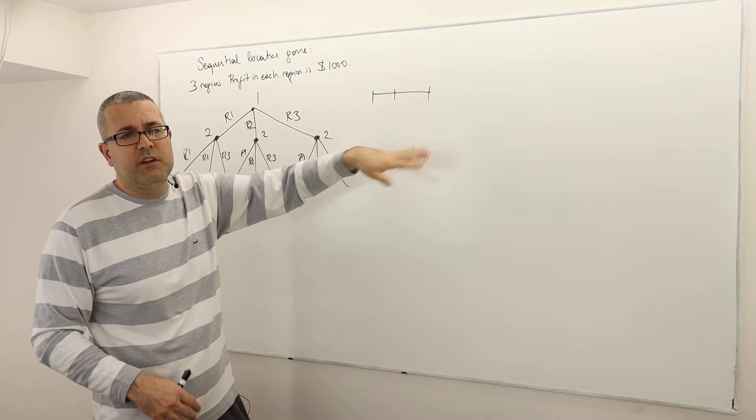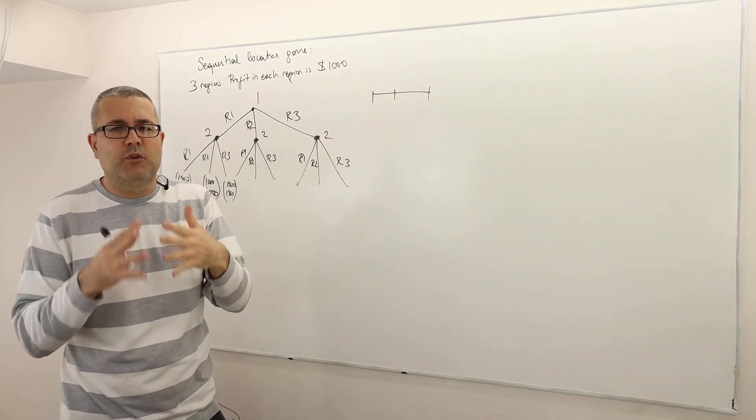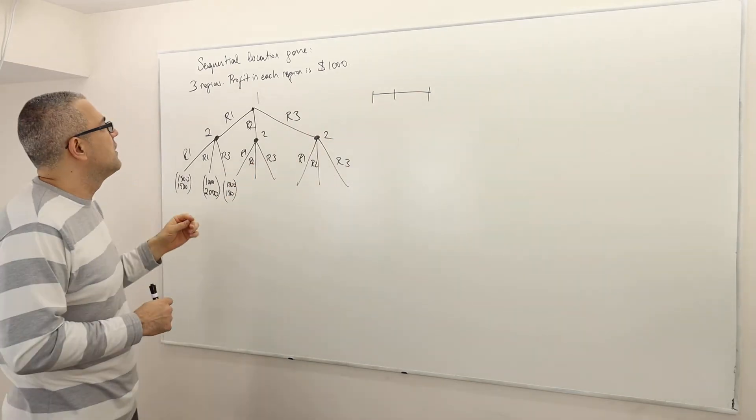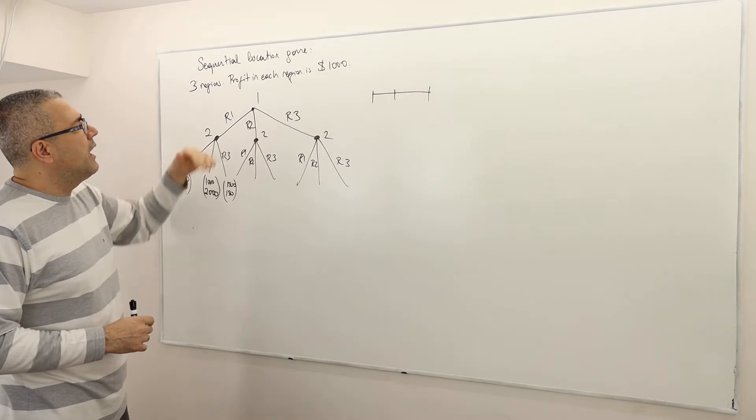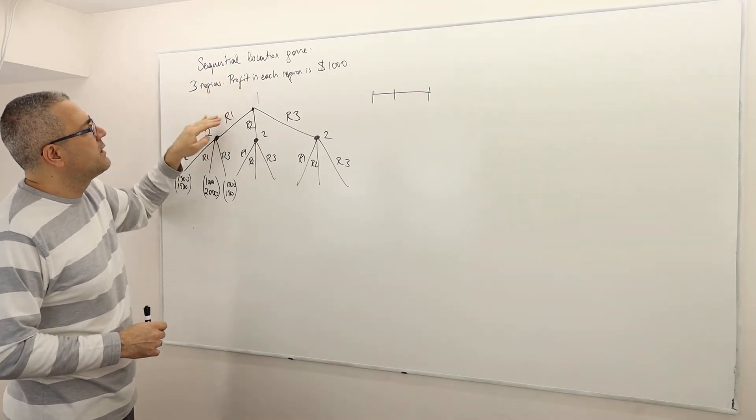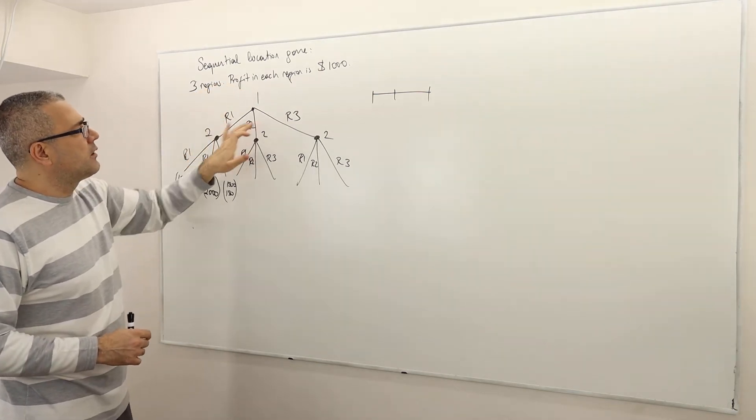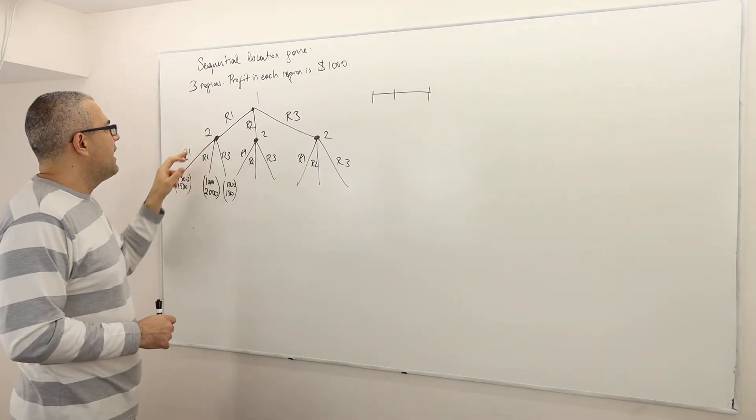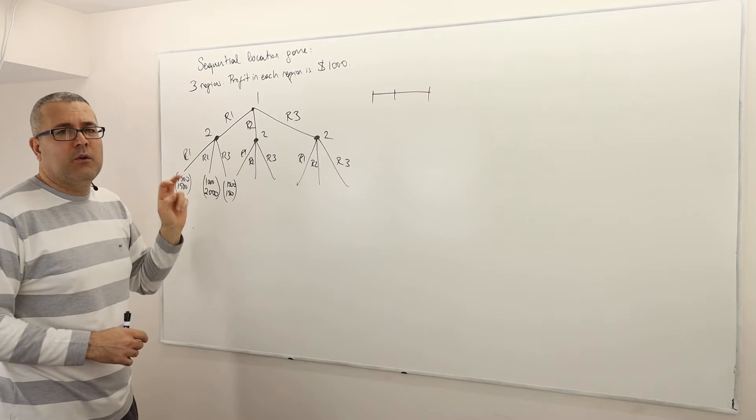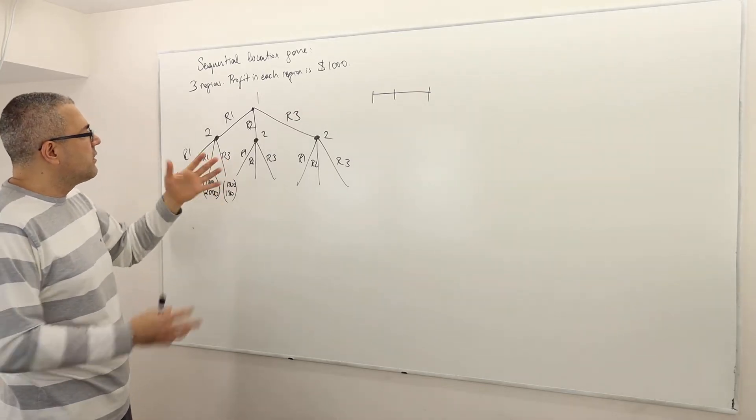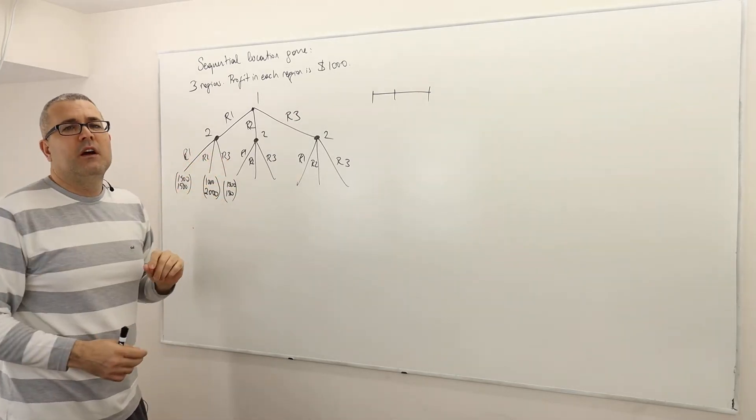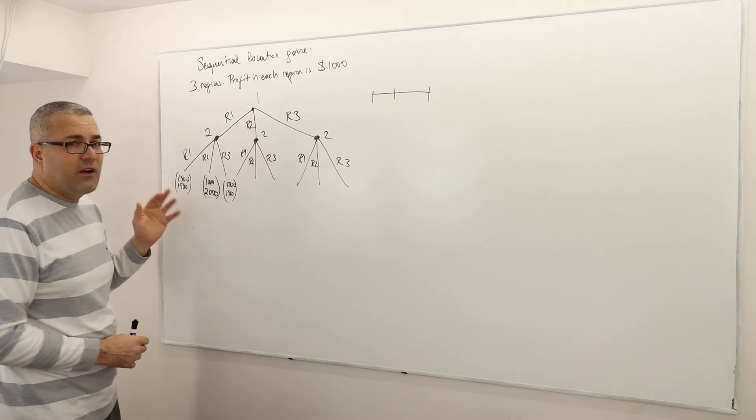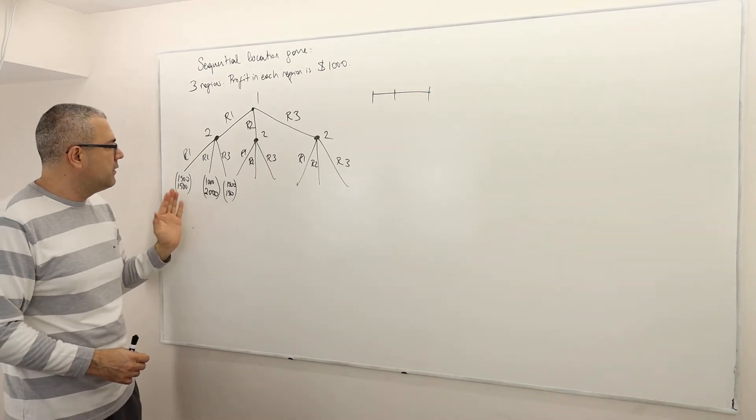So there are three regions. That means there's room for collecting $3,000 of profit. So what happens, player one moves first, selects a region, R1, R2, R3, and then player two, firm two, observes the choice, and then selects R1, R2, or R3. So as you see, there's a lot of branches here, and then obviously you have to fill out the payoffs.